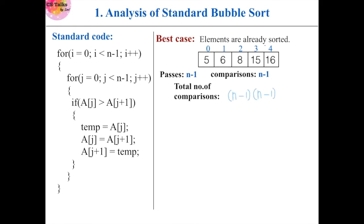So the total number of comparisons is (n-1) × (n-1), because in each iteration of the outer loop the inner loop executes n-1 times. Solving this gives a polynomial equation, and considering only the higher order term, the best case time complexity is O(n²).